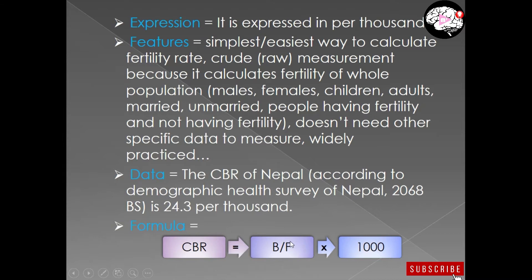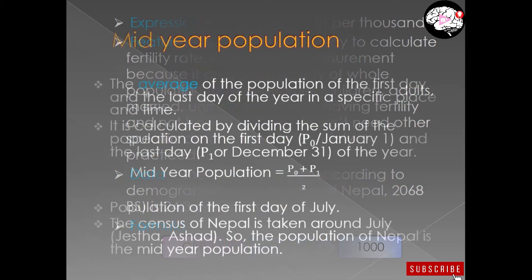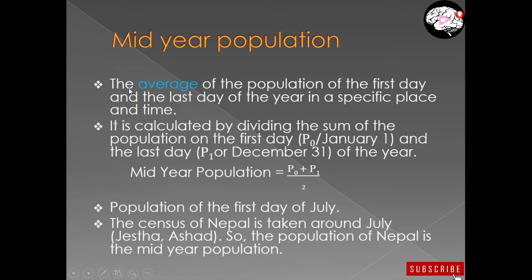Now you need to understand what P, the mid-year population, means. Mid-year population is the population of the middle of the year. More precisely, mid-year population is the average of the population on the first day and the last day of the year in a specific place. So average population equals the population of the first day plus the population of the last day, divided by 2.